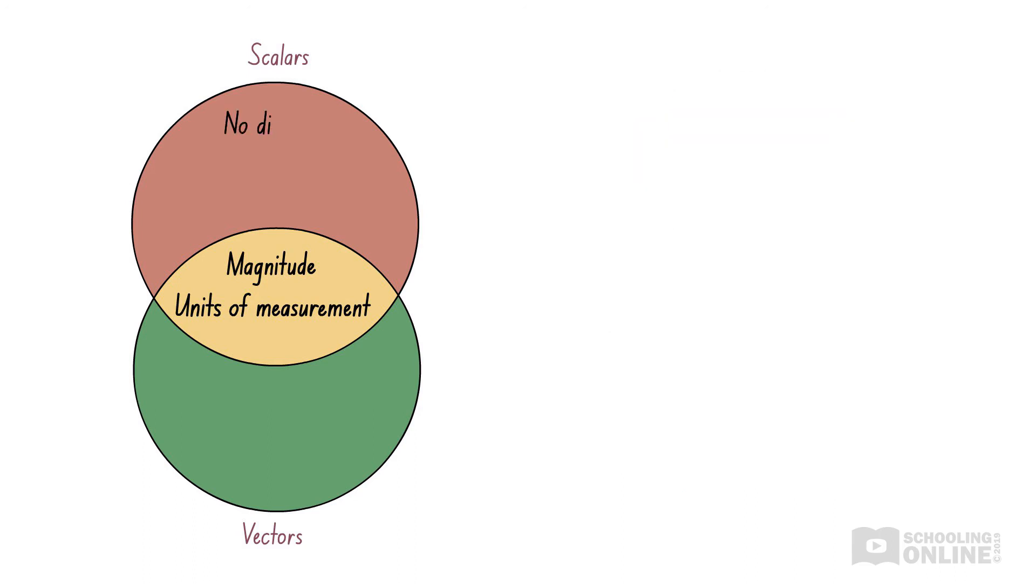As we mentioned earlier, vectors have a direction, while scalars do not. Furthermore, if we try adding a direction to a scalar quantity, then we usually produce an answer that doesn't make sense. Let's see how this can be applied through a simple scenario.